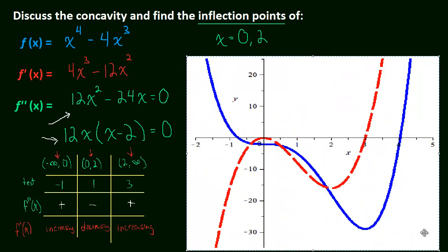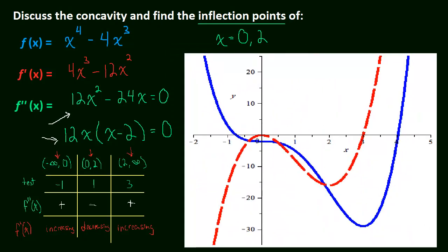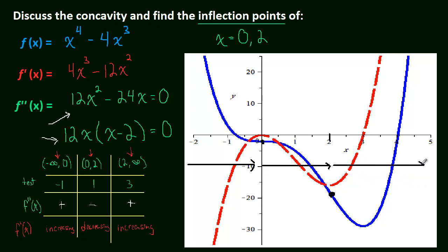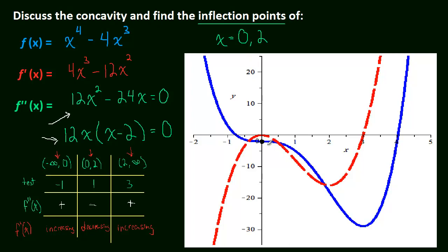In blue we have the original function, and in red we have its derivative. The function is concave up from negative infinity to zero, concave down from zero to two, and concave up from two to infinity. Our points of inflection are at x equals zero and x equals two.